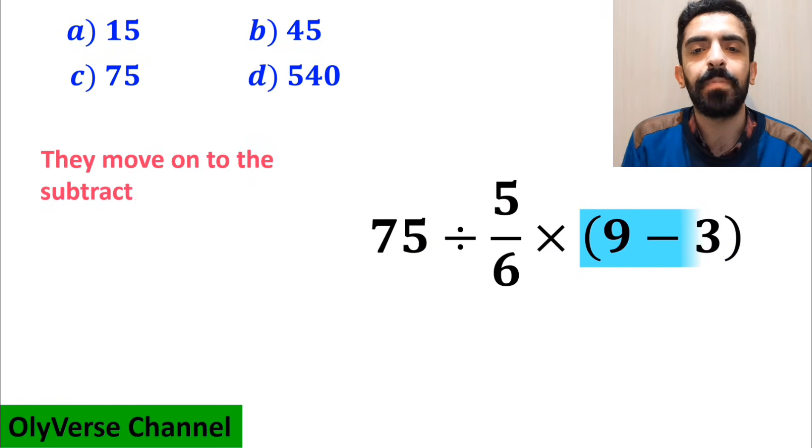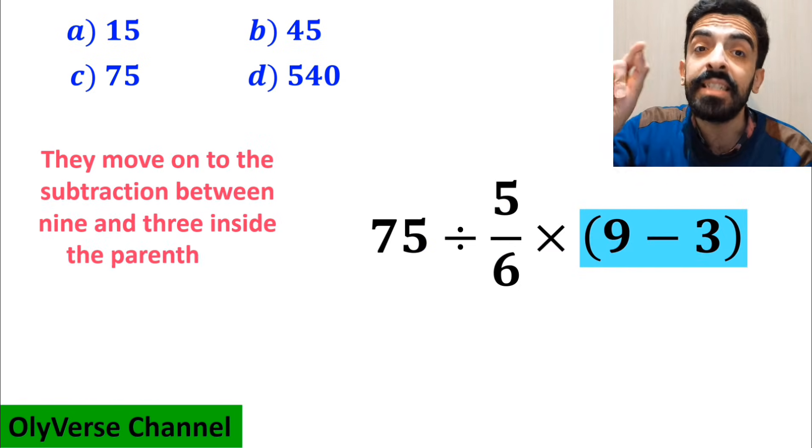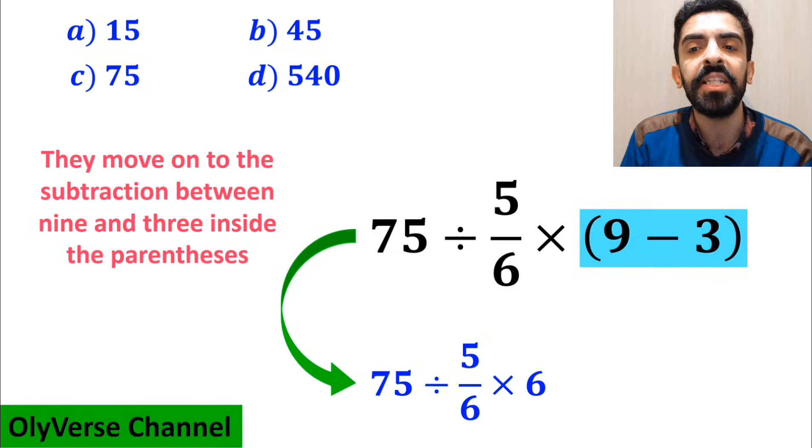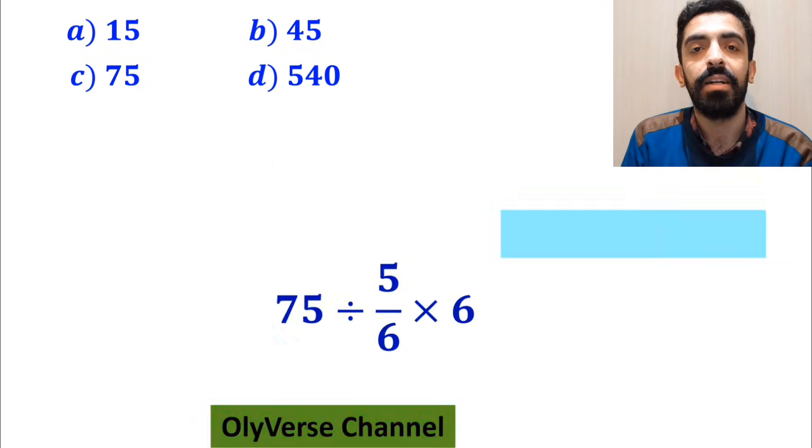And the next step, they move on to the subtraction between 9 and 3 inside the parenthesis and simplify this expression to 75 divided by 5 over 6 times 6.